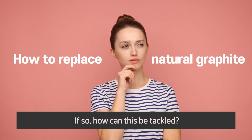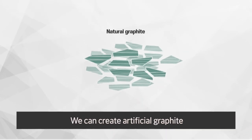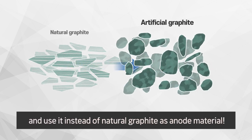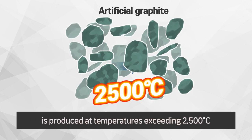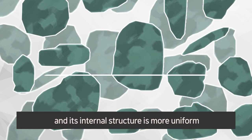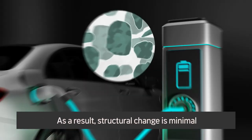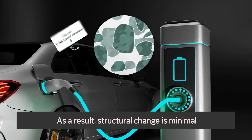If so, how can this be tackled? We can create artificial graphite and use it instead of natural graphite as anode material. Artificial graphite is produced at temperatures exceeding 2,500 degrees Celsius, and its internal structure is more uniform and stable than natural graphite.